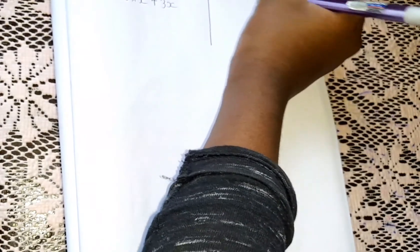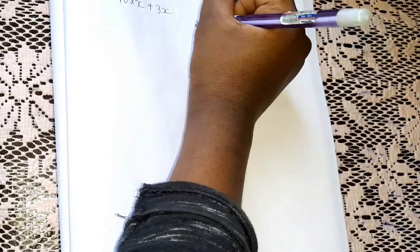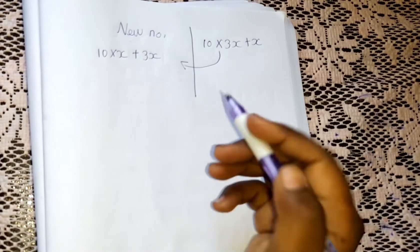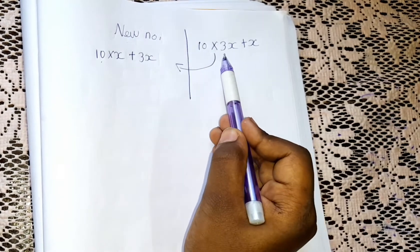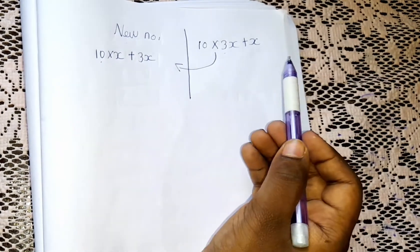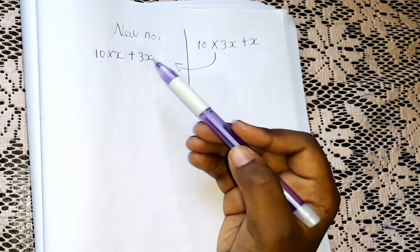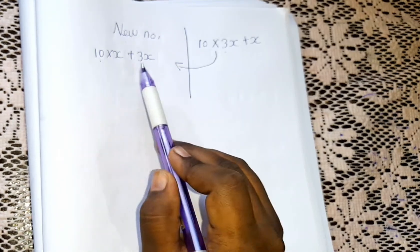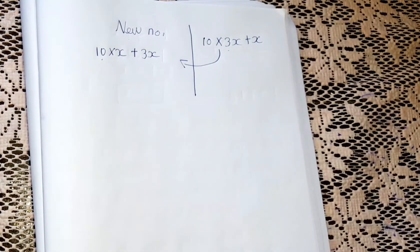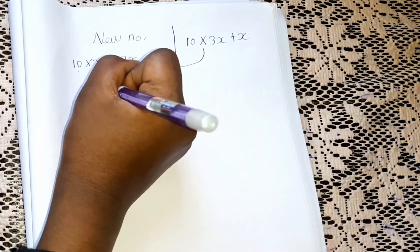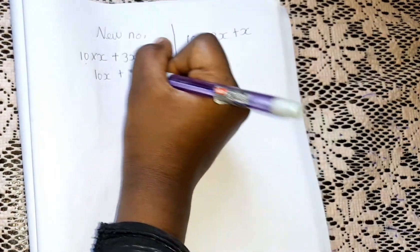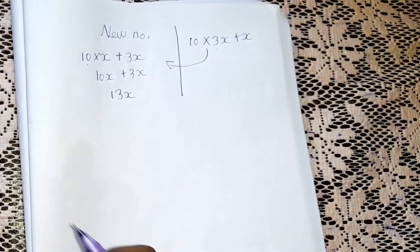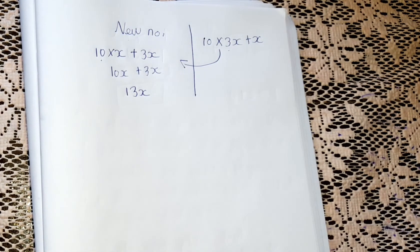So we have 10 into x plus 3x. The 3x moved to the ones place and x moved to the tens place. 10 into x is 10x, plus 3x, so 10x plus 3x is 13x. Our new interchanged number is 13x.